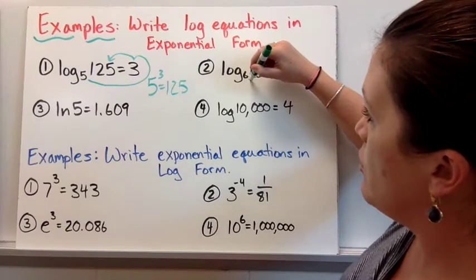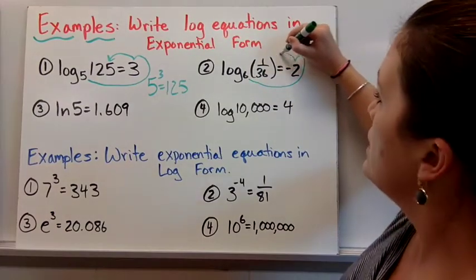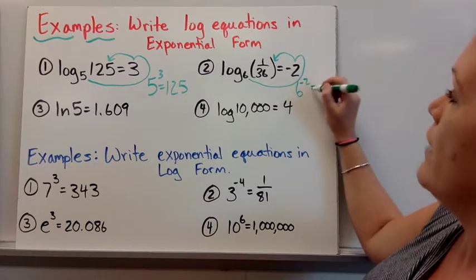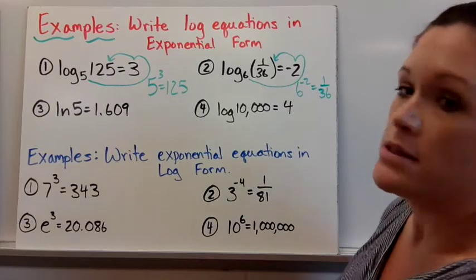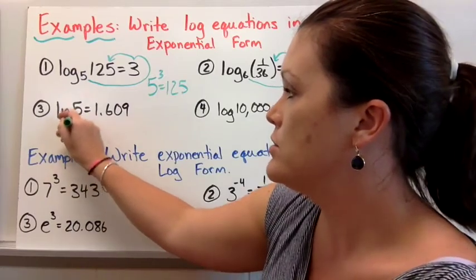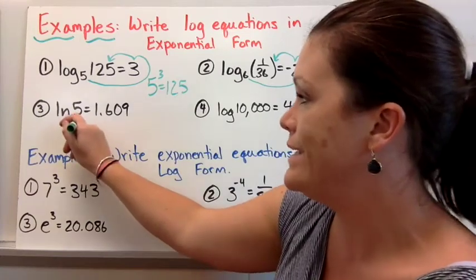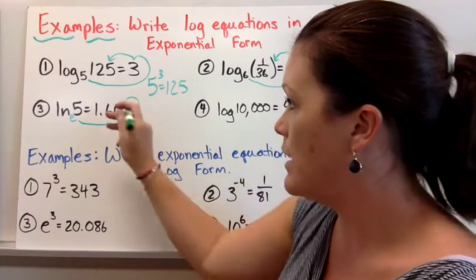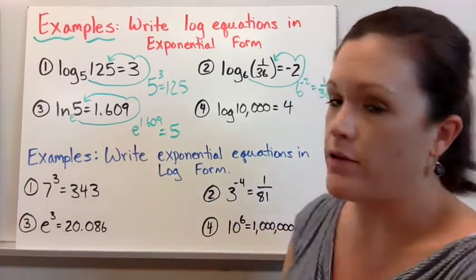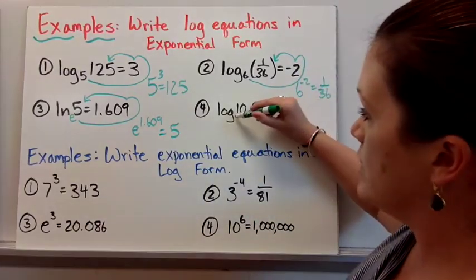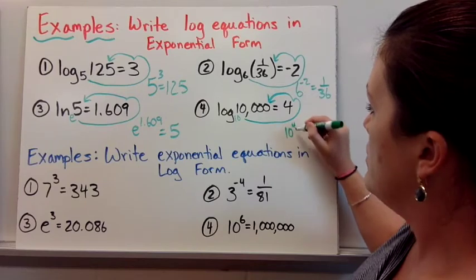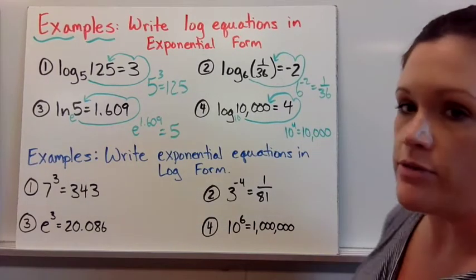On number 2, rewrite it without log. Take the base to this power equals whatever is sitting right here. So 6 to the negative 2 power equals 1 over 36. On number 3 we have a natural log but there's no base written, so we understand that's an E. E to the 1.609 power equals 5. Log has no base so we understand there's a 10. So 10 to the 4th power equals 10,000. We're just practicing rewriting.